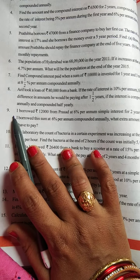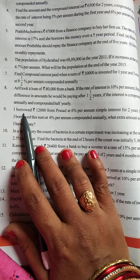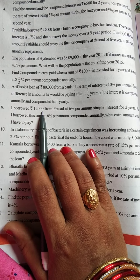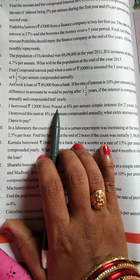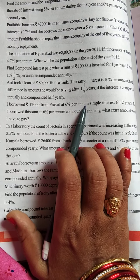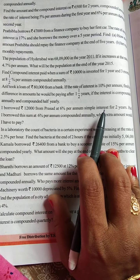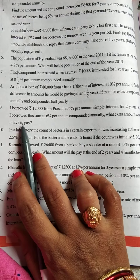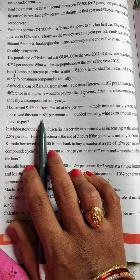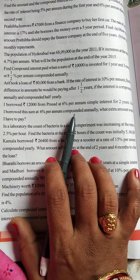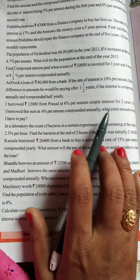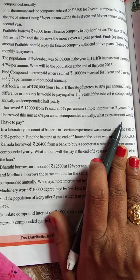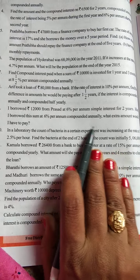Ninth question. I am going to explain. I borrowed 12,000 rupees from Prasad at 6% per annum simple interest for 2 years. Had I borrowed this sum at 6% per annum compounded annually, what extra amount would I have to pay?